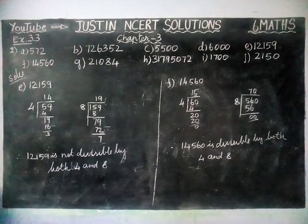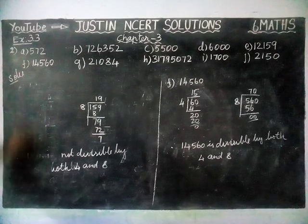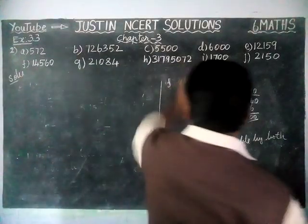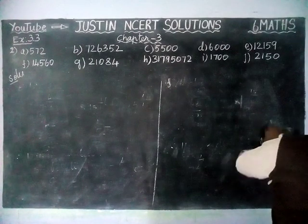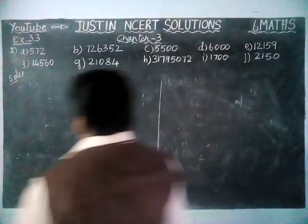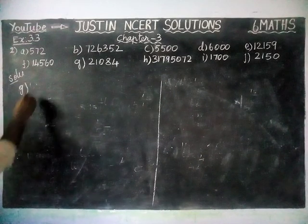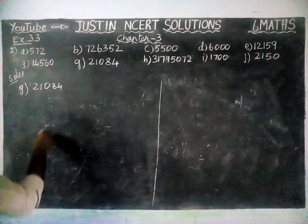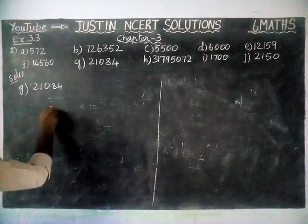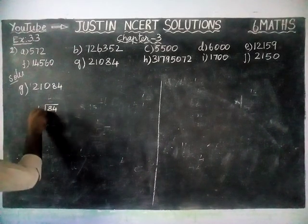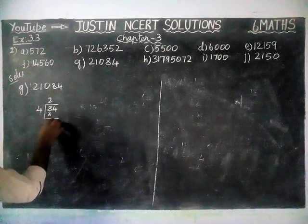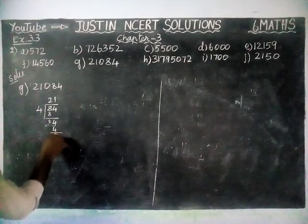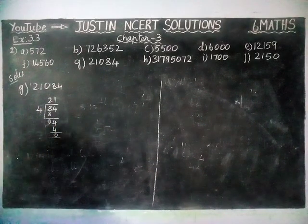Next, option G: 21,084. We check the last 2 digits, which are 84. Dividing 84 by 4: 2 fours are 8, remaining 0, bringing down 4. 1 four is 4, remaining 0. So the given number is divisible by 4.